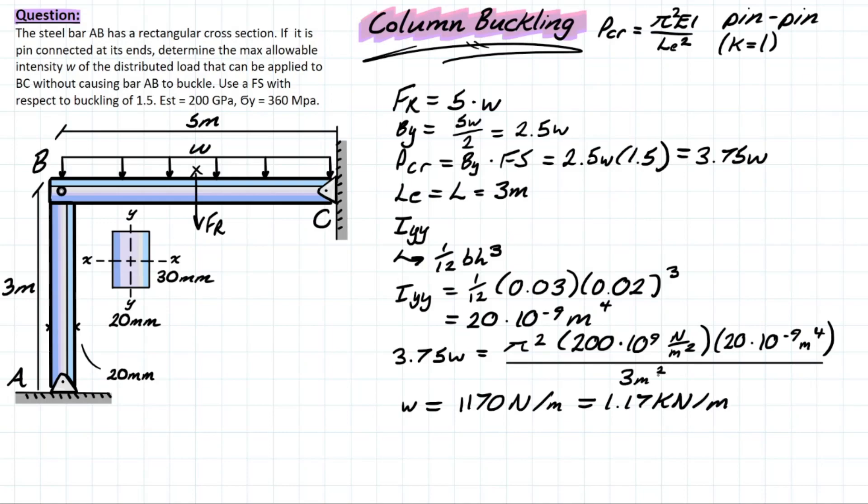Solving for this, you have a distributed load intensity of 1170 newtons per meter, which is equal to 1.17 kilonewtons per meter, which is a more common unit. Now plugging this back into our formula for what Pcr is, we have Pcr—